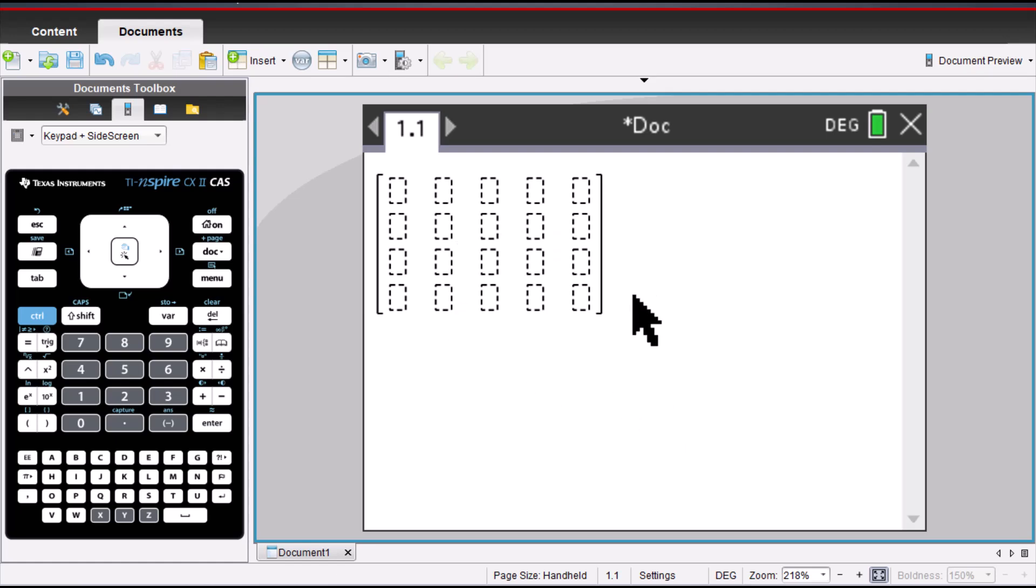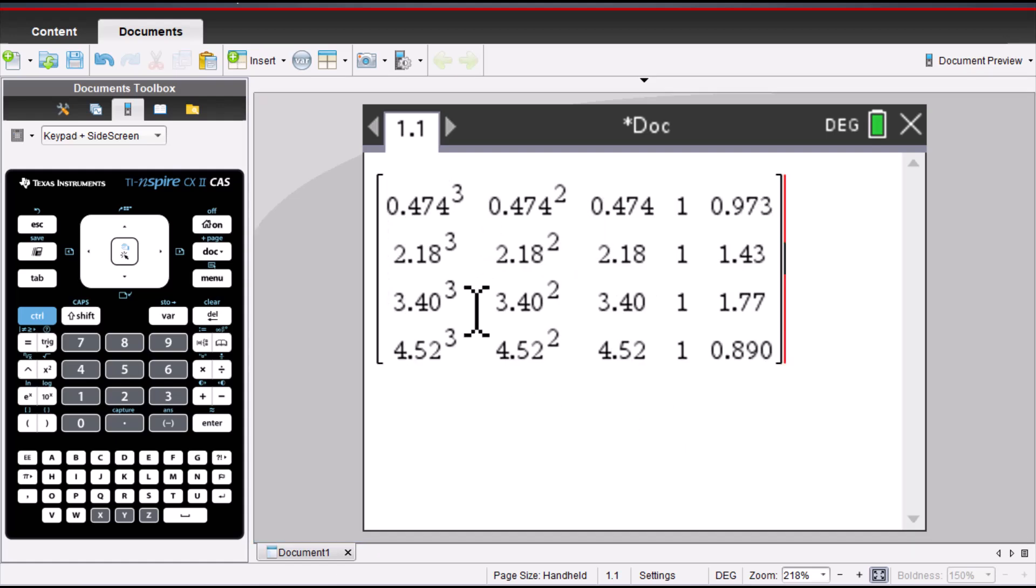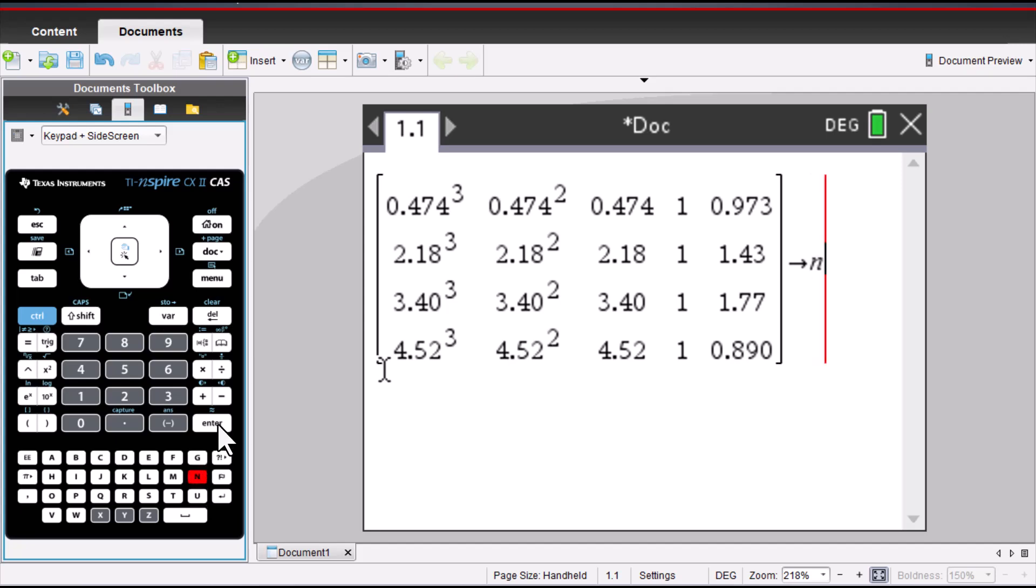Then type in all those values. After you typed all the values into this matrix, we store this matrix into an alphabet letter. So, control variables. We will save this as n. Then enter.